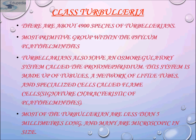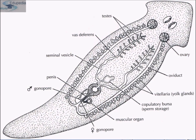This is the representation of class Turbularia. Since sexes are not separate, male and female organs are present in one organism. These are the testes, this is the penis, these are the seminal receptacles, and there is also a sperm storage structure known as the copulatory bursa. Female gonads are also present in the same organism, including ovary and oviduct, along with yolk glands.